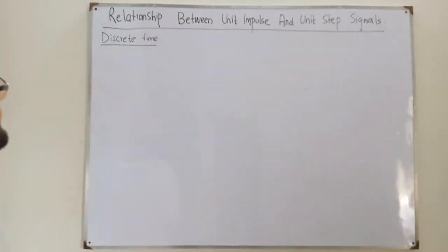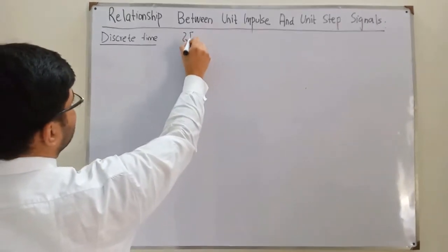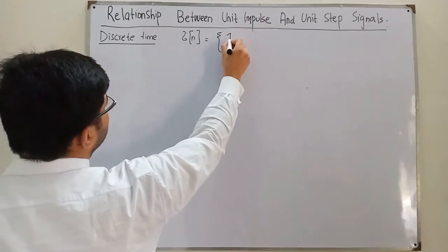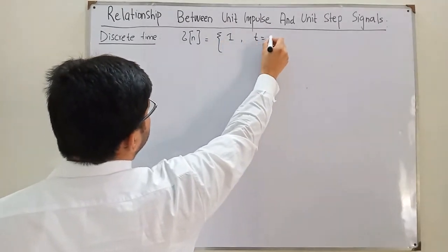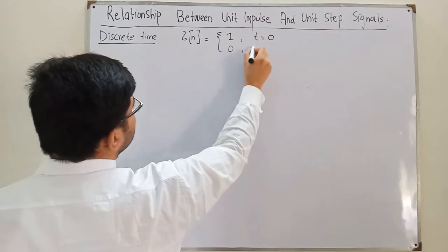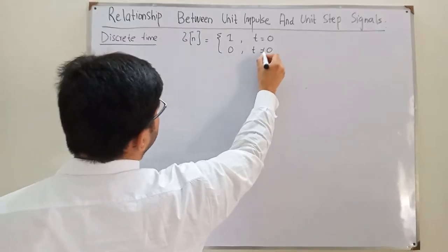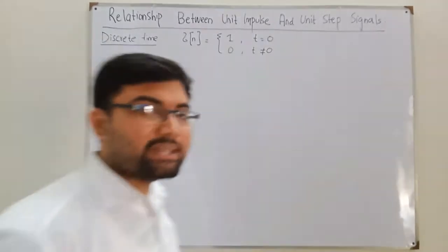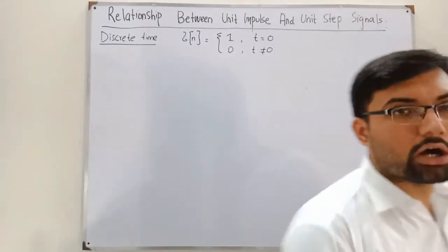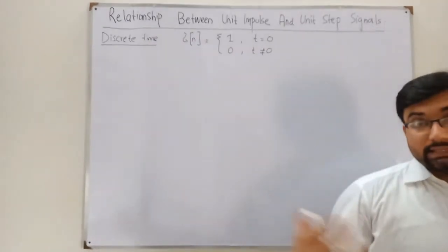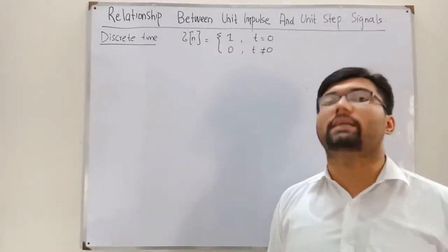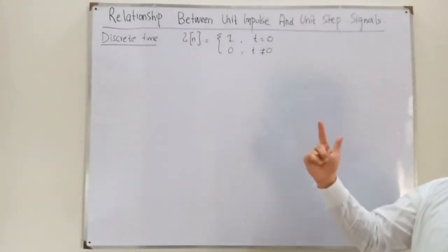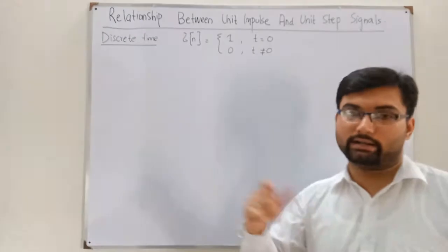Now the impulse signal, delta of n — you know that this equals 1 at t equal to 0 and equals 0 at any other value of t. Now you know why I have written this value 1. This 1 does not represent the value at t equal to 0; this is not the magnitude. This basically tells us about the strength or the area of the curve. The magnitude of the unit impulse function is undefined at t equal to 0.